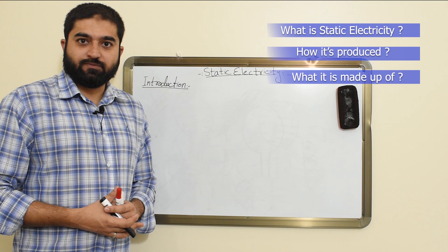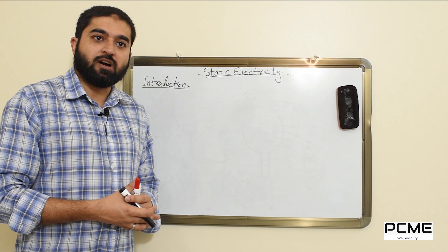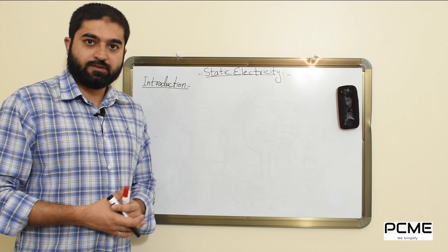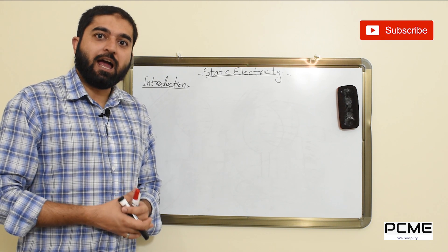According to the definition, static electricity is the stationary charge developed on an object. Now the question here is what is charge and how it is developed.